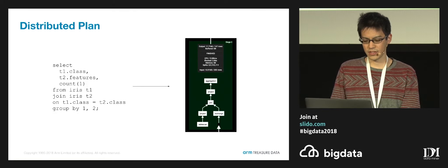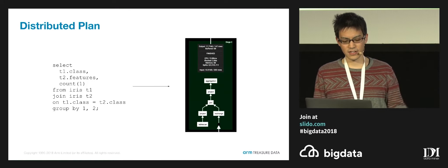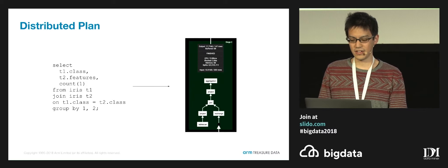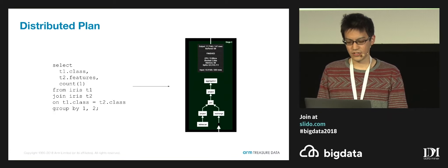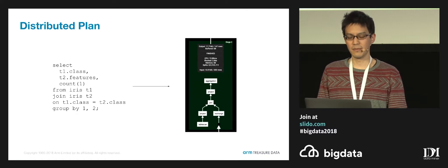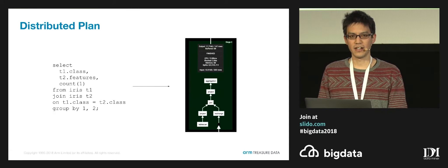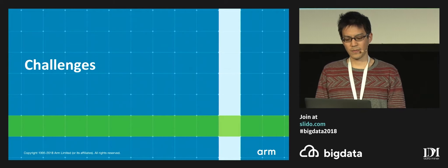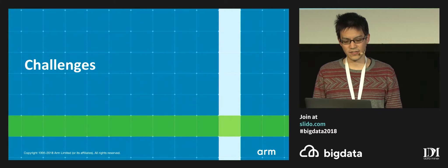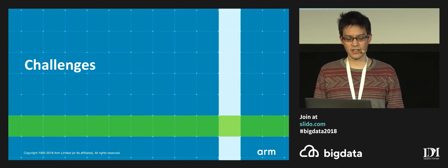So why can we achieve high performance just by distributing? For example, this is a distributed plan example. If a customer submits a query, the query will be interpreted and optimized into a distributed plan. Each task fragment can be run completely in parallel on multiple worker nodes. So we can achieve much higher performance, which cannot be achievable by just using a single node machine. Thanks to efficient open source software like Apache Hadoop, we can achieve much higher performance in the distributed data analysis field.